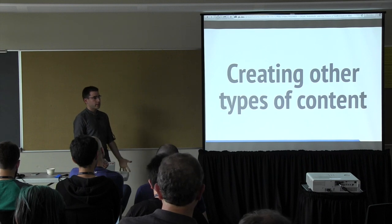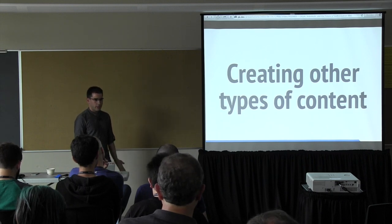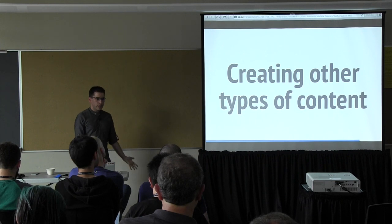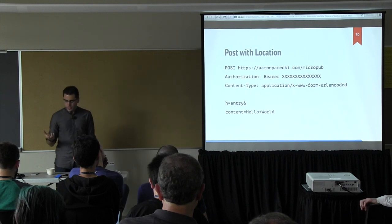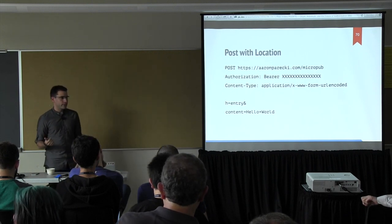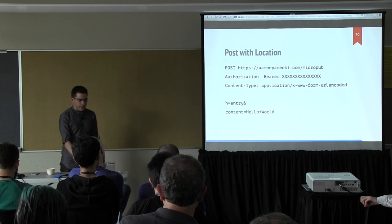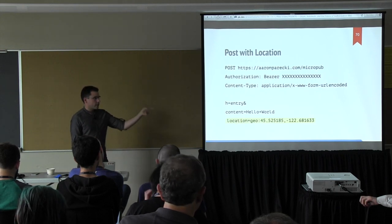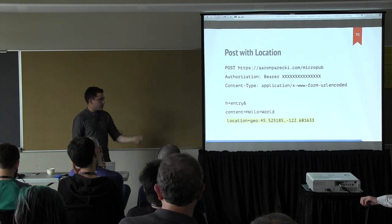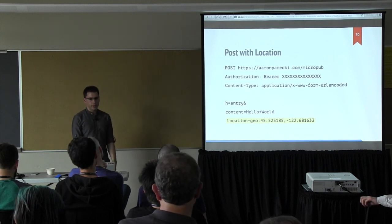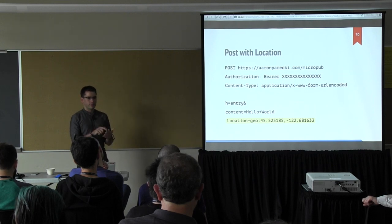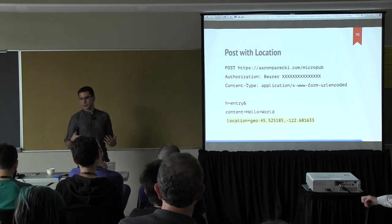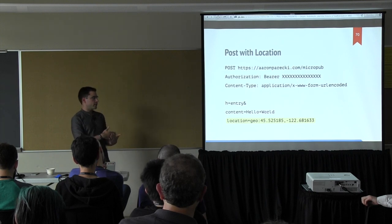But what if you want to create other types of content? Text notes are interesting — Twitter showed us they're very powerful — but Instagram is pretty cool too. Maybe you want to include location with a post, just say I'm in Portland or I'm at this venue. We can start adding fields. You can represent a location as a latitude and longitude — there's already a geo URI spec for that. In Quill, when you're writing a note and hit the Find Me button, it uses the browser geolocation API, finds the lat/long, and includes that in the POST request.